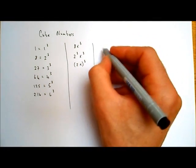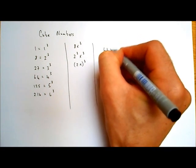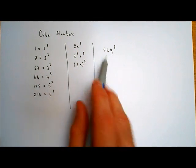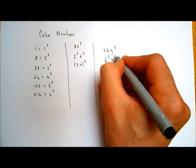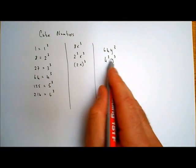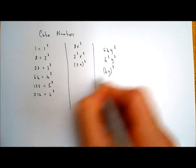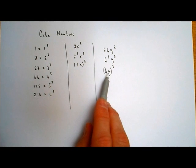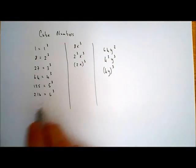Let's have a look at another one. Let's say we have 64y³. Well, 64 is the same as 4 cubed because 64 is a cube number. So I could rewrite that as 4 cubed times y cubed, and then rather than writing the cube twice, I could rewrite that as (4y)³. So 4y means 4 multiplied by y, and when I go 4 by 4 by 4 I get 64, and y by y by y gives me y cubed.